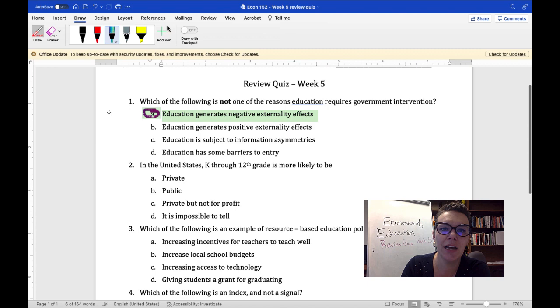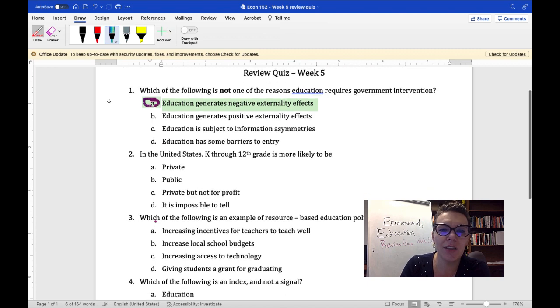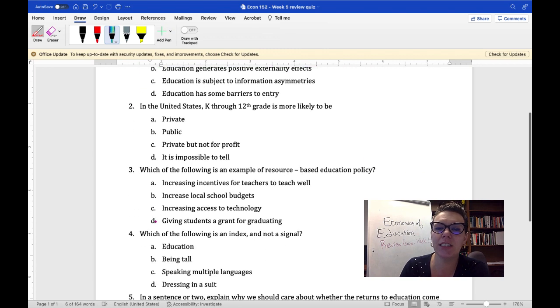The next question asks, in the United States K through 12 education is more likely to be public, private, private but not for profit, or it's impossible to tell. And if you went through K through 12 education in the US then this is a little bit easier because you're probably familiar with it, but we did talk about this in the class. K through 12 education in the US tends to be public, which means it's publicly funded and not private and not for profit.